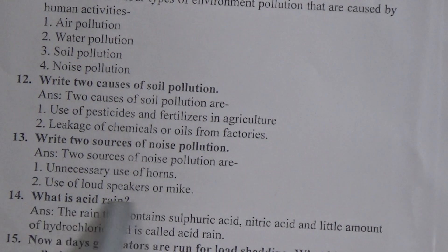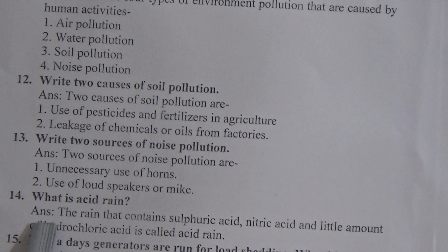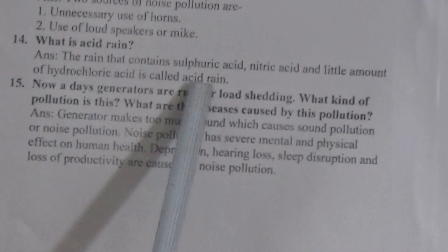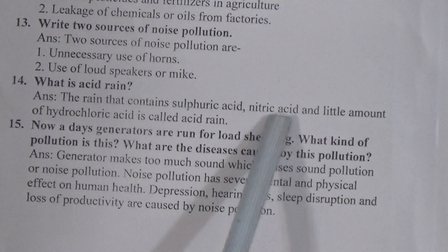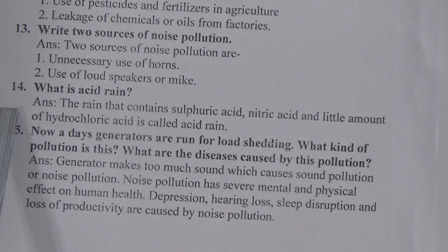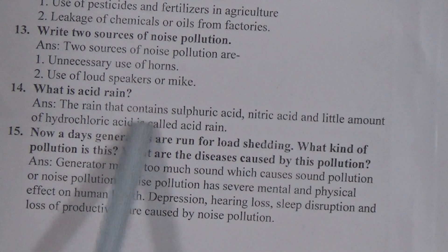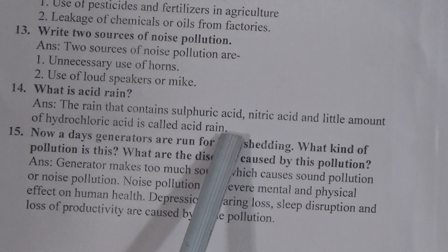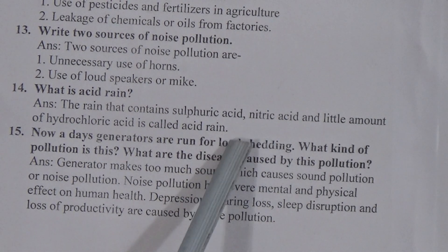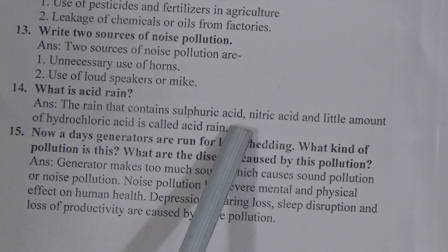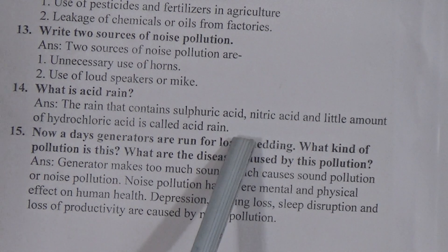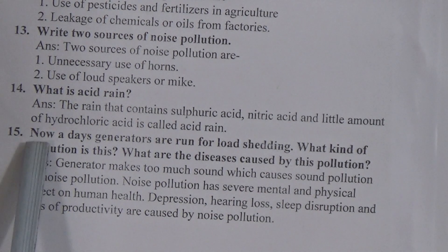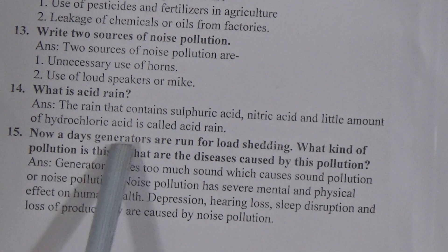Question number 14: what is acid rain? The answer is: the rain that contains sulfuric acid, nitric acid, and a small amount of hydrochloric acid is called acid rain. Acid rain is caused by polluted air and is very harmful for all living beings.